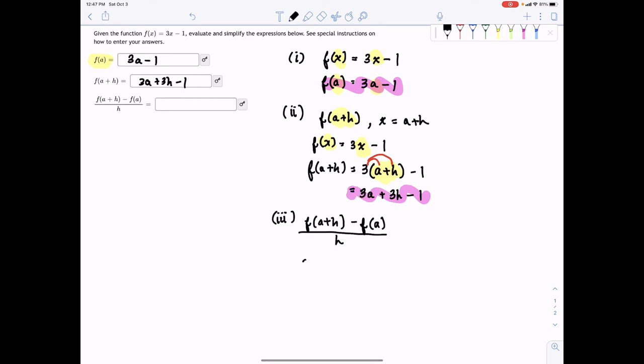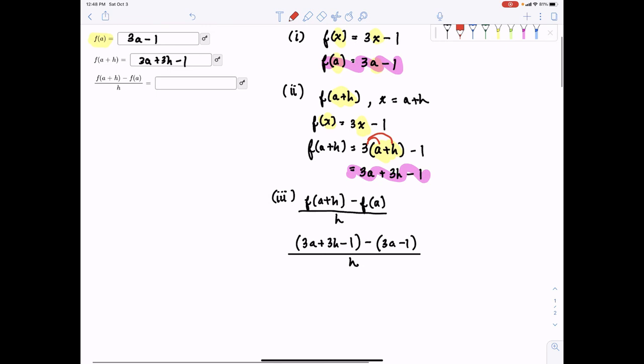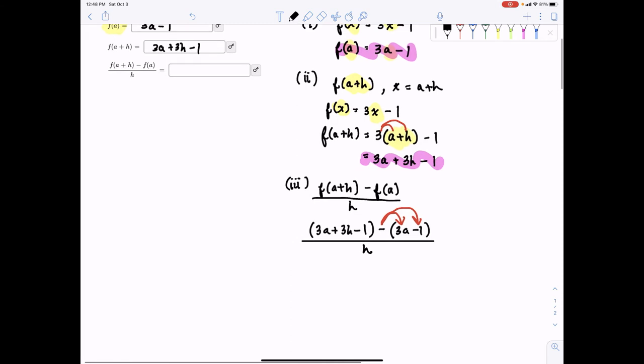So we have 3a plus 3h minus 1 minus f(a), which is 3a minus 1, all over h. And so we just need to be careful here when simplifying because don't forget that this subtraction means we have to distribute to each inside the parentheses after the subtraction sign. So the first parentheses we can just take out.